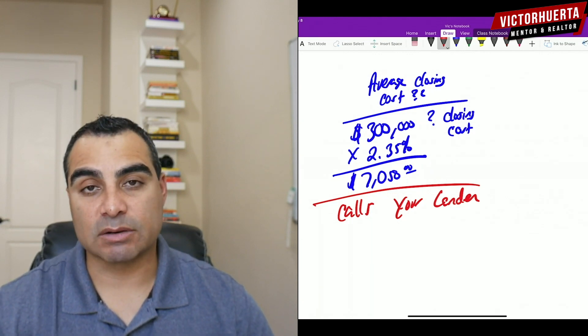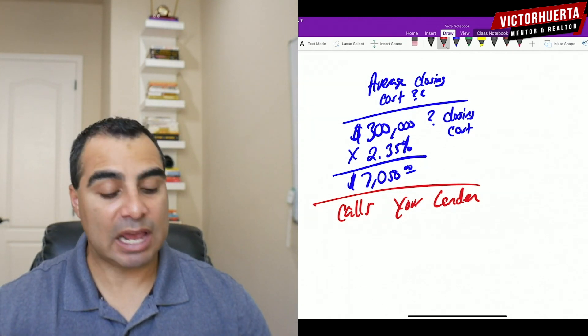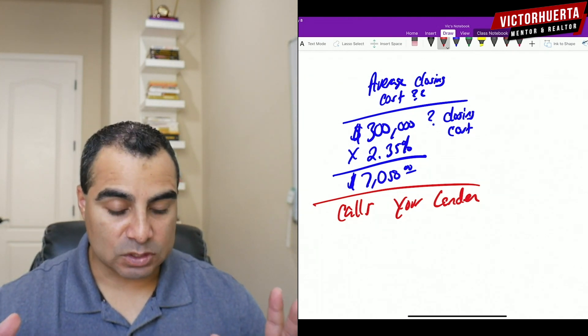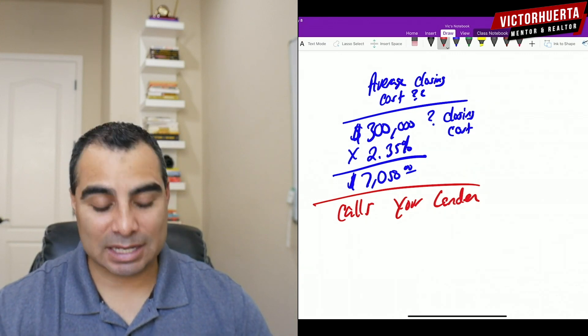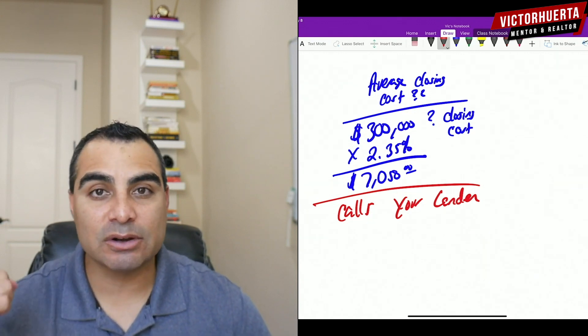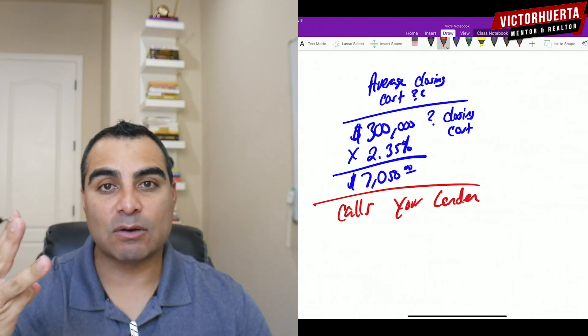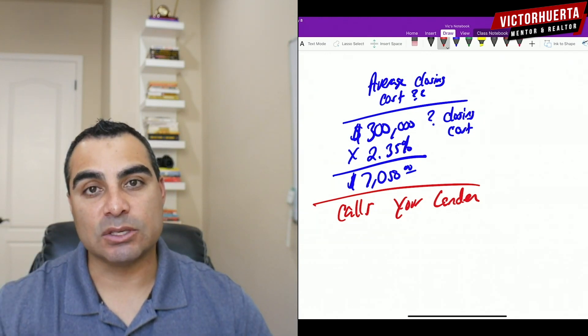We've been doing a lot here in Phoenix, Arizona, but the average closing costs, if you're just looking for an average and how to calculate it, you can use a calculator out there, but usually it's 2.35% of the purchase price. But it's also going to depend on your lender, your loan program, the title company, et cetera. But that's kind of like a basic figure that I use.